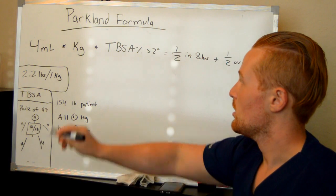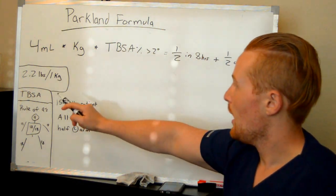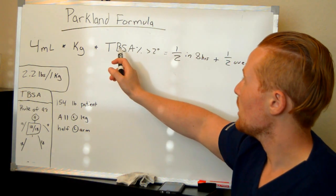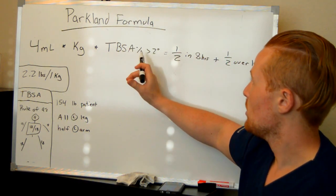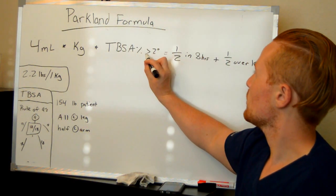So some key terms here. A kilogram is 2.2 pounds, and TBSA, this is a total body surface area percentage that is burned with greater than or equal to a second degree burn.